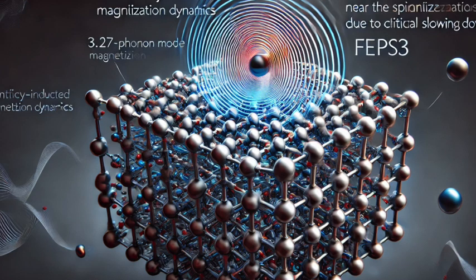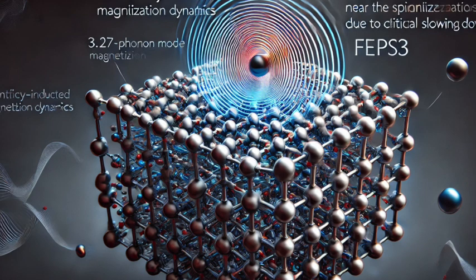But it's not just random jiggling, is it? No, it's very specific. The light sets those springs vibrating at a precise frequency, and those vibrations, those phonons, are what ultimately influence the magnetic behavior. Okay, so we've got our terahertz light acting like a tiny hammer tapping on very specific vibrations within the material.